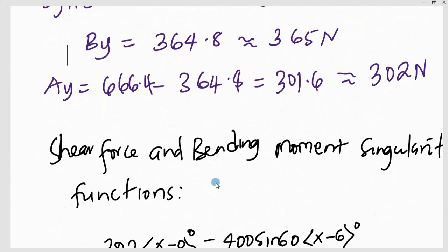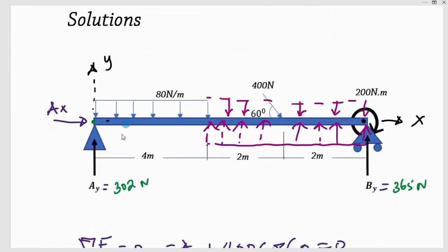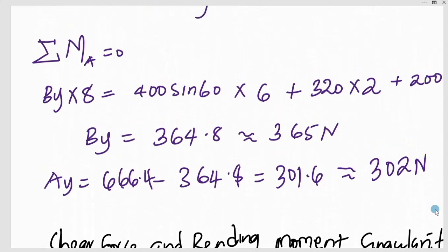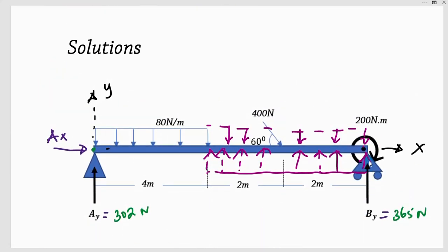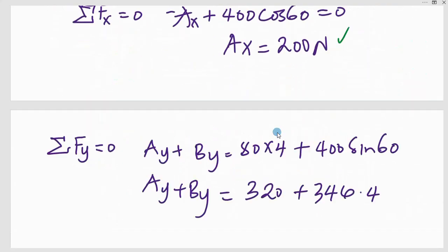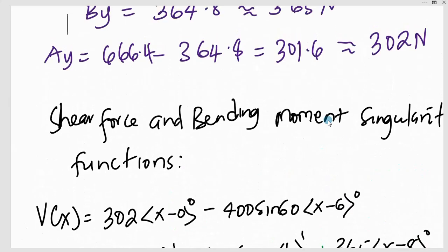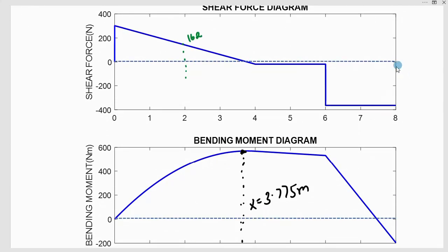For the bending moment diagram, from the start it is parabolic. Then checking at X equal to 6, we have a point load which will cause a jump on the shear force diagram. The shear force then comes back to 0 at X equal to 8. Both the shear force diagram and the bending moment diagram should start from 0 and end at 0.